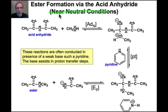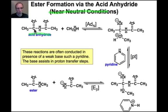Under neutral conditions, a good example is ester formation via the acid-anhydride functional group. The acid-anhydride functional group is shown here — it has an oxygen connecting two carbonyl groups. The substitution reaction is going to take place at this carbonyl carbon, and it's the acetate group that is replaced with methoxide, which is derived from the nucleophile.